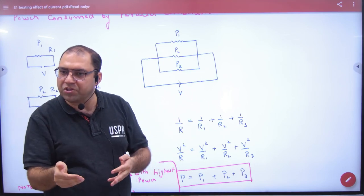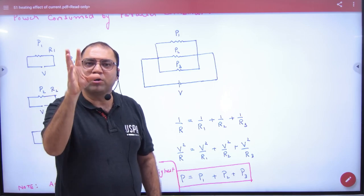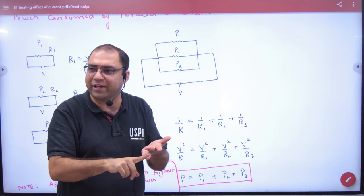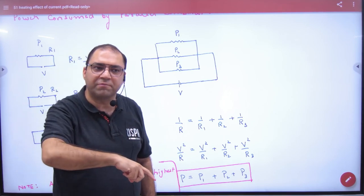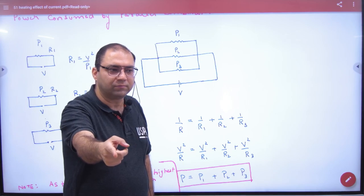So when it is parallel combination, who will be more bright? Who will be more light? The voltage is the same. V is the same. So it is 30-watt, so 30-watt will be more bright. And who will be more light? 30-watt. Let us solve it.